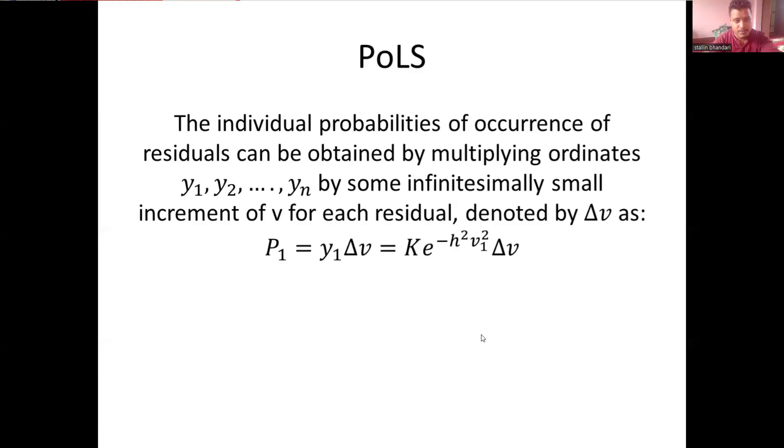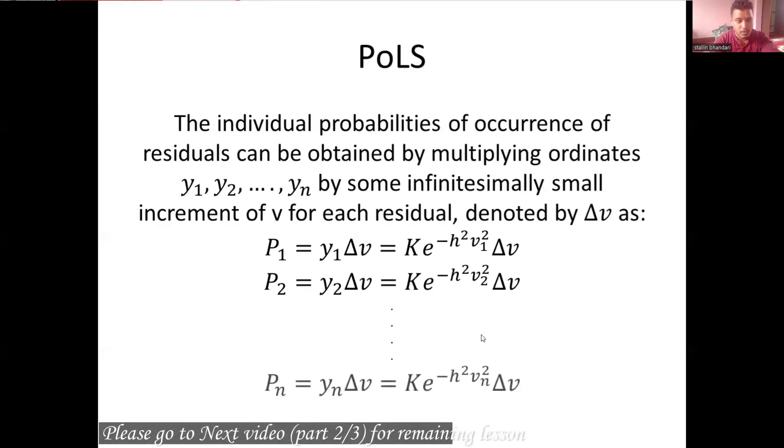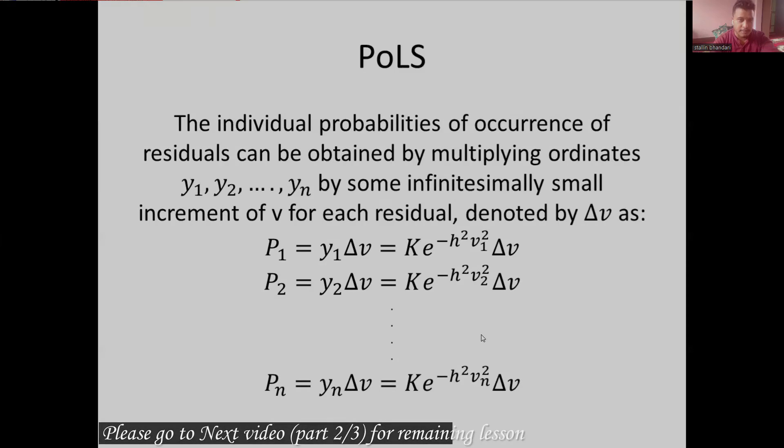Like this, the probability for occurrence of v1 is p1, which is y1 times del v, and given by k e to the power negative h square v1 square, and they all should be multiplied by del v. In the similar way, we can calculate probability for the second observation, third observation, fourth, and so on, up to nth observations.